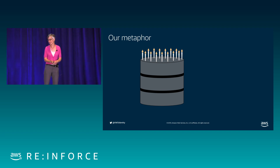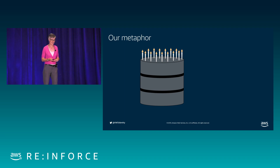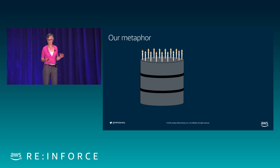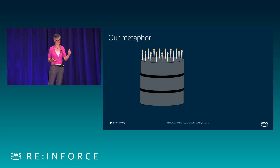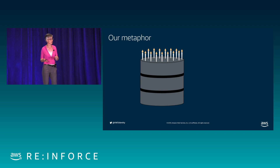We're going to adopt a metaphor to answer this question. I borrowed this cake metaphor from Quint Van Diemen, who's an excellent AWS identity speaker. We're going to use this metaphor because it helps us delineate the question — who has access to what under what conditions — by the segments of audiences for whom you're trying to answer it. When I talk to customers, I find this delineation really helps them think about the layers of their infrastructure and how they might answer the question with different solutions.